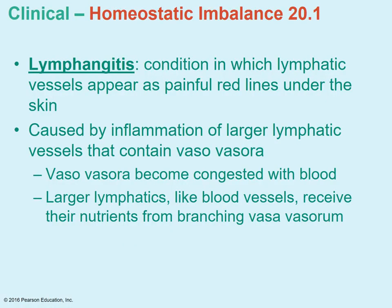You can also see on that previous picture the location of many of the lymph nodes. Sometimes there is a condition called lymphangitis, where the lymphatic vessels look like red lines under the skin — it's inflammation. Anything that ends with -itis means inflammation, so this is inflammation of those lymphatic vessels.